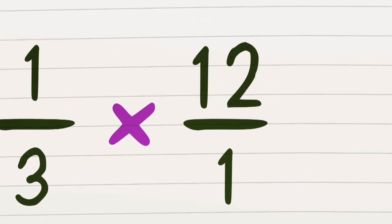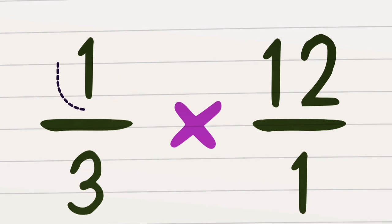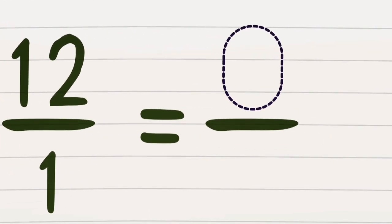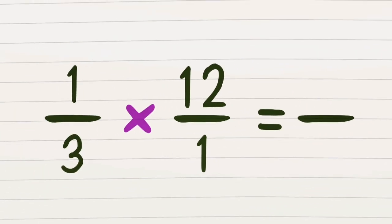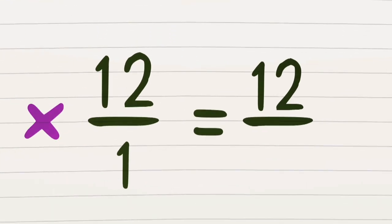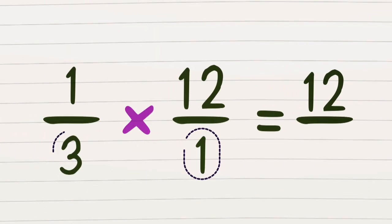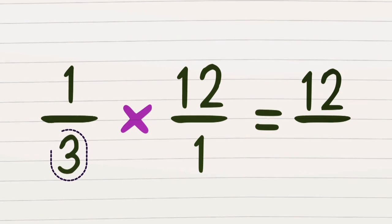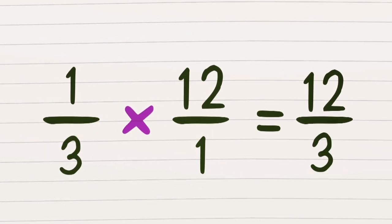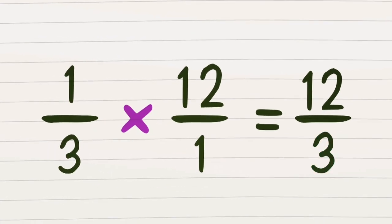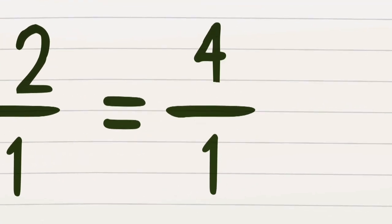Now multiply the numbers on the top side together; whatever the solution, it becomes the numerator. If it's one times twelve, it's equal to twelve. Now multiply the numbers on the bottom side together — the answer that we get is now the new denominator. So three times one becomes three, and we have twelve over three for an answer of four.